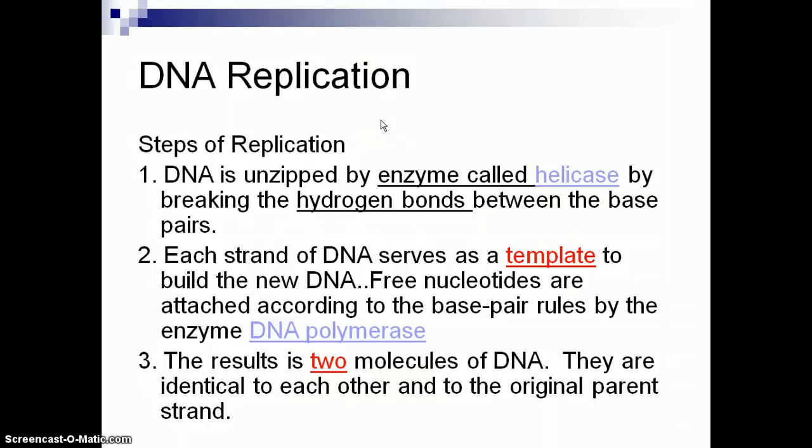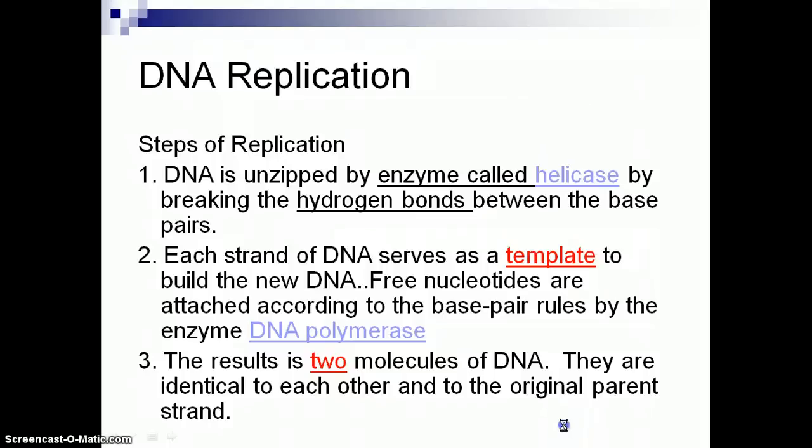So what were the steps again? First, the DNA got unzipped by an enzyme called helicase. Why is it called helicase? Because it's in charge of breaking up the helix. And what's it actually breaking? It's breaking the hydrogen bond between the bases. Each DNA strand serves as a template to build the new DNA. And that enzyme was called DNA polymerase. That was the one that was in there adding the new base pairs. As a result, you end up with two identical molecules of DNA that are identical to each other and the parent DNA strand.